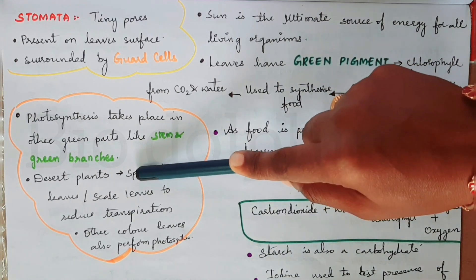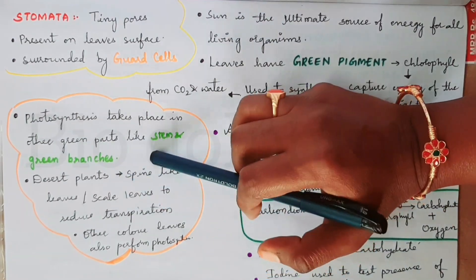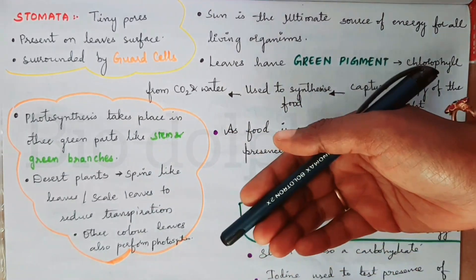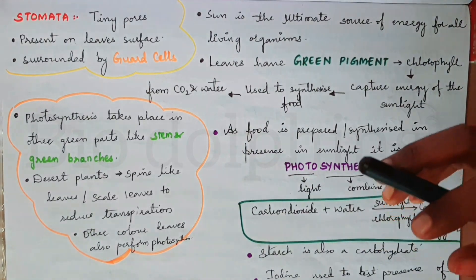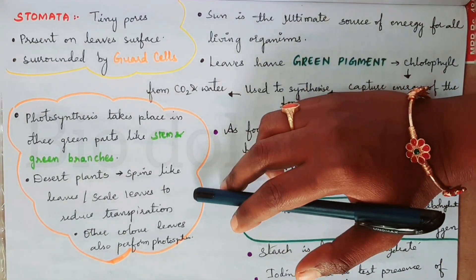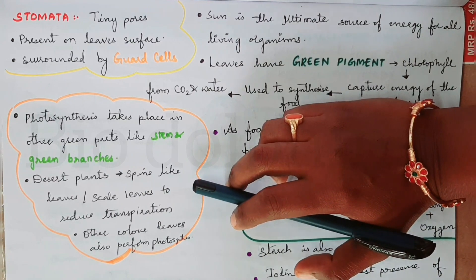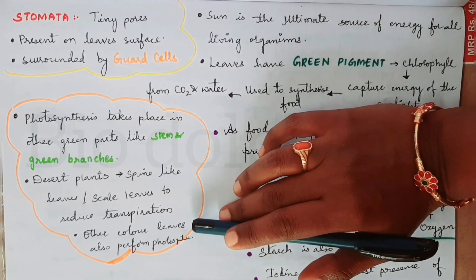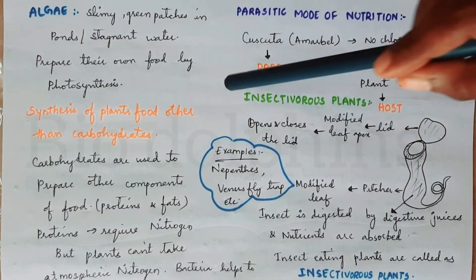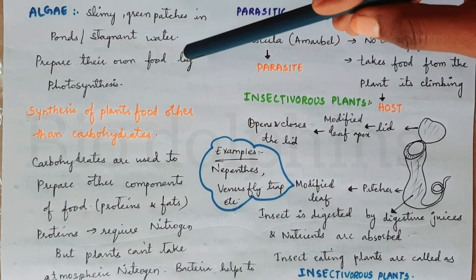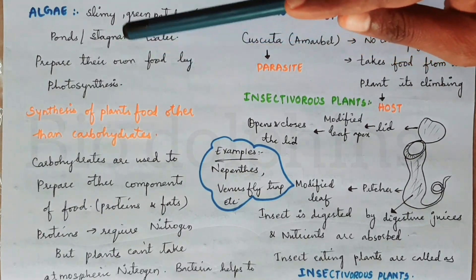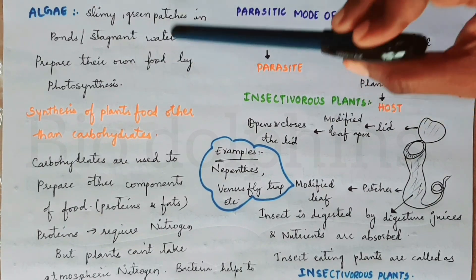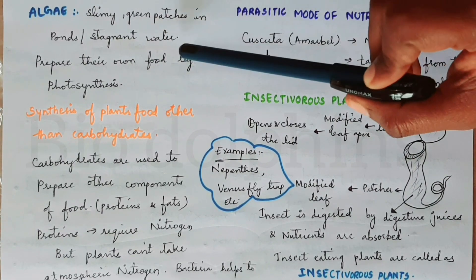In desert plants, leaves are modified into spines to reduce transpiration, so photosynthesis occurs in the green parts. Leaves of different colors can also perform photosynthesis. Algae found in stagnant water and ponds form green patches by the process of photosynthesis.